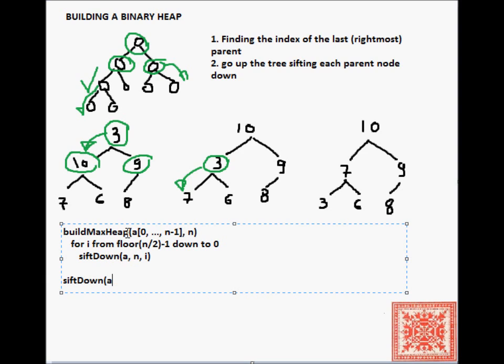And for every non-leaf node, we will call this procedure sift down, which the job of this procedure is to find the proper place of that node, either in the left subtree or the right subtree. In the worst case, it's going to be pushed down or sifted down all the way to the leaf level.